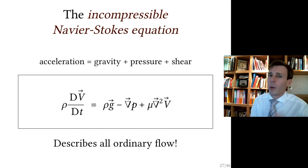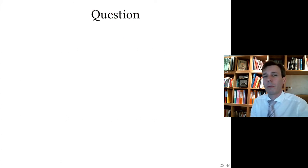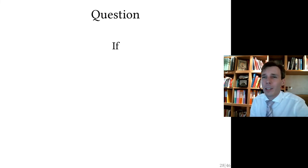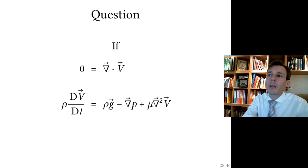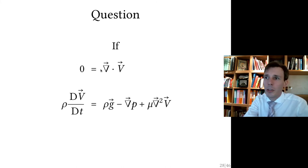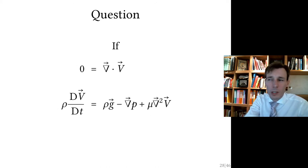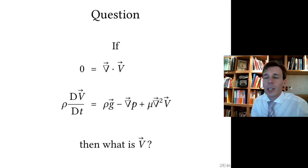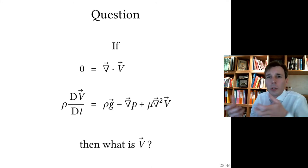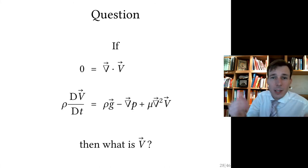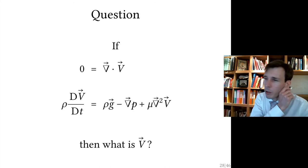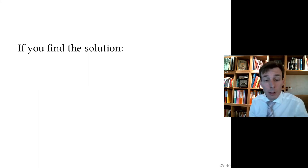We apply two laws together: conservation of mass — the continuity equation, divergence of velocity equals zero — and the Navier-Stokes equation for incompressible flow. Given these two conditions, the question is: what is V? This is not the solution; it is the problem.